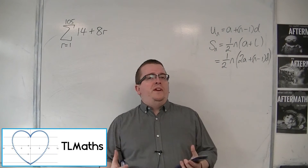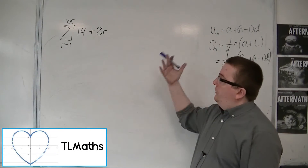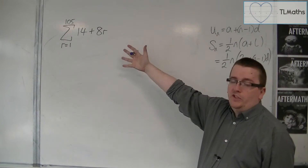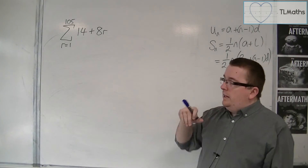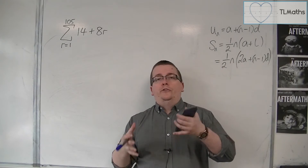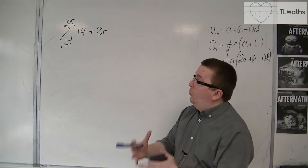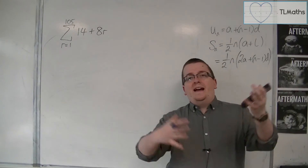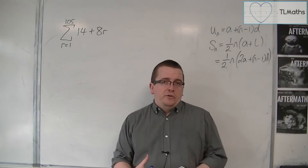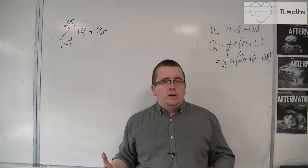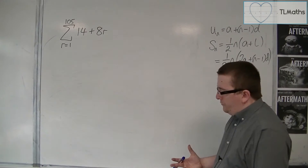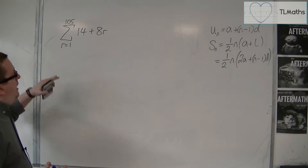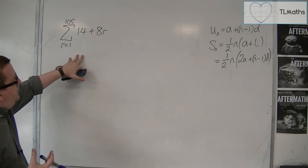If the problem is presented to us as a series in sigma notation, it's all well and good knowing that you can substitute in R=1 and then all the way up to R=105 and then add them all together. But that process is ridiculously long. So how are we going to go about evaluating this sum?